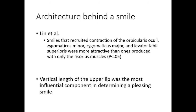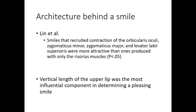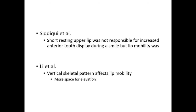OAN et al. reported that smiles that recreated contraction of the orbicularis oculi, zygomaticus minor, zygomaticus major, and levator labii superioris were more attractive than ones produced with only the risorius muscles. In a study where 1,242 growing participants were evaluated, vertical length of the upper lip was the most influential component in determining a pleasing smile. OAN et al. reported that a short resting upper lip was not responsible for increased anterior tooth display during a smile, but lip mobility was.